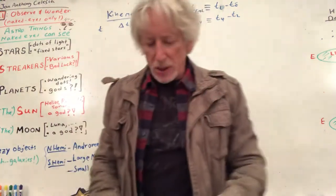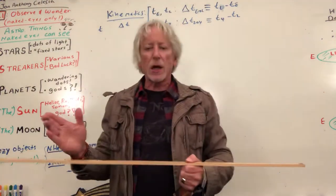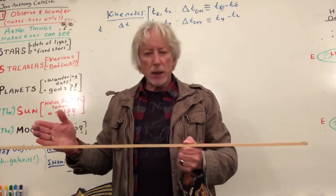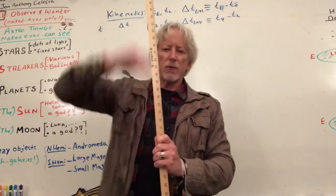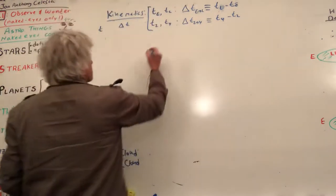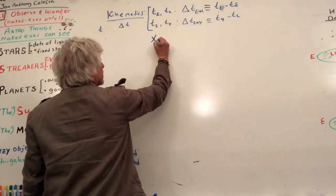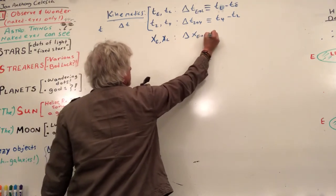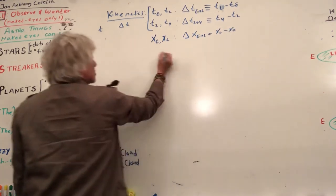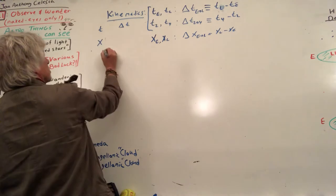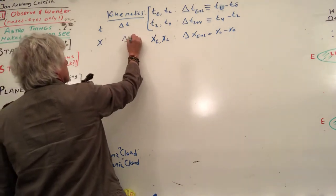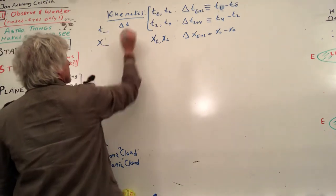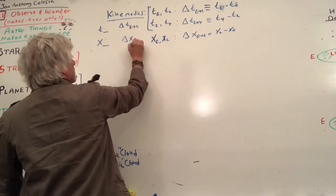Then we deal with position. We use x — don't use x for anything other than position right now. We can also use y and z; often y is for vertical but it doesn't have to be. We can use particular positions earlier and later, and the change in position is called displacement.